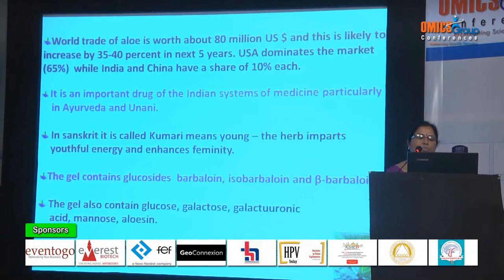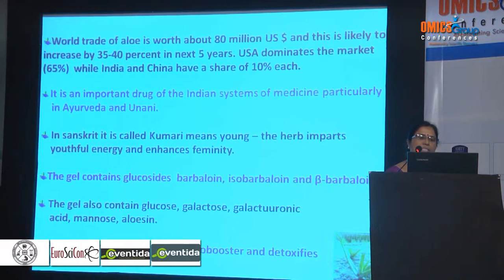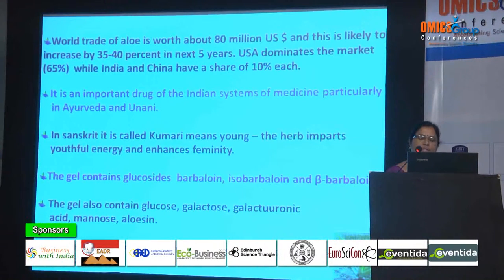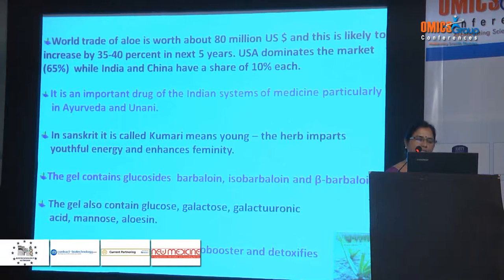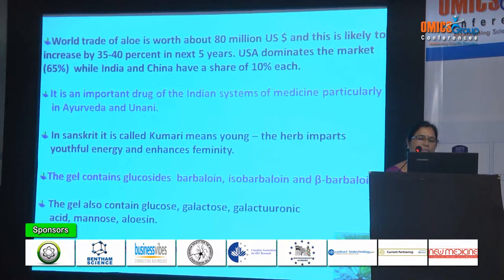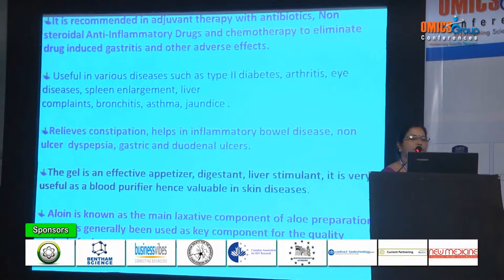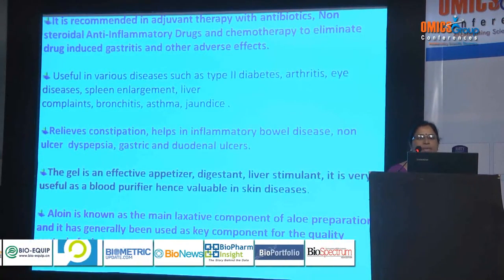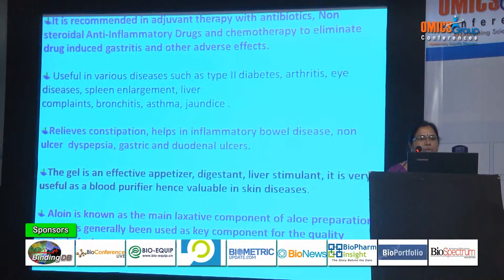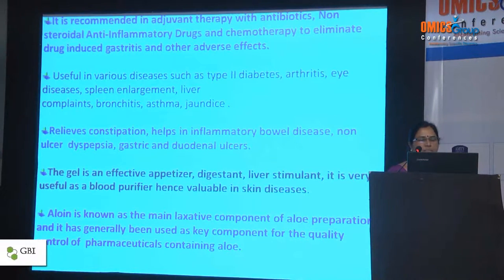In Sanskrit it is called Kumari because it imparts youthfulness and enhances immunity. The gel contains glucosides — barbaloin, isobarbaloin, and beta-barbaloin. The gel also contains glucose, galactose, galacturonic acid, mannose, and aloesin. Pharmacologically it is an immunobooster and detoxifies the system. It is recommended in adjuvant therapy with antibiotics, non-steroidal anti-inflammatory drugs, and chemotherapy to eliminate drug-induced gastritis and other adverse effects.